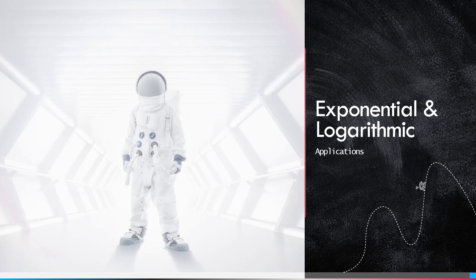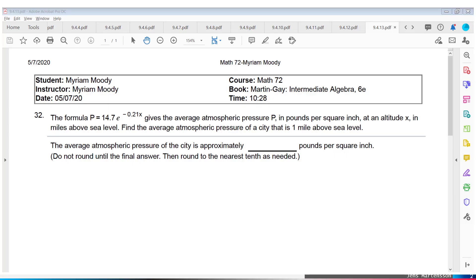Let's talk about applications involving exponential and logarithmic functions. Let's take a look at this first one. It says the formula P equals 14.7 times E to the negative 0.21x gives the atmospheric pressure P in pounds per square inch at an altitude X in miles above sea level. They would like us to find the average atmospheric pressure of a city that is one mile above sea level.